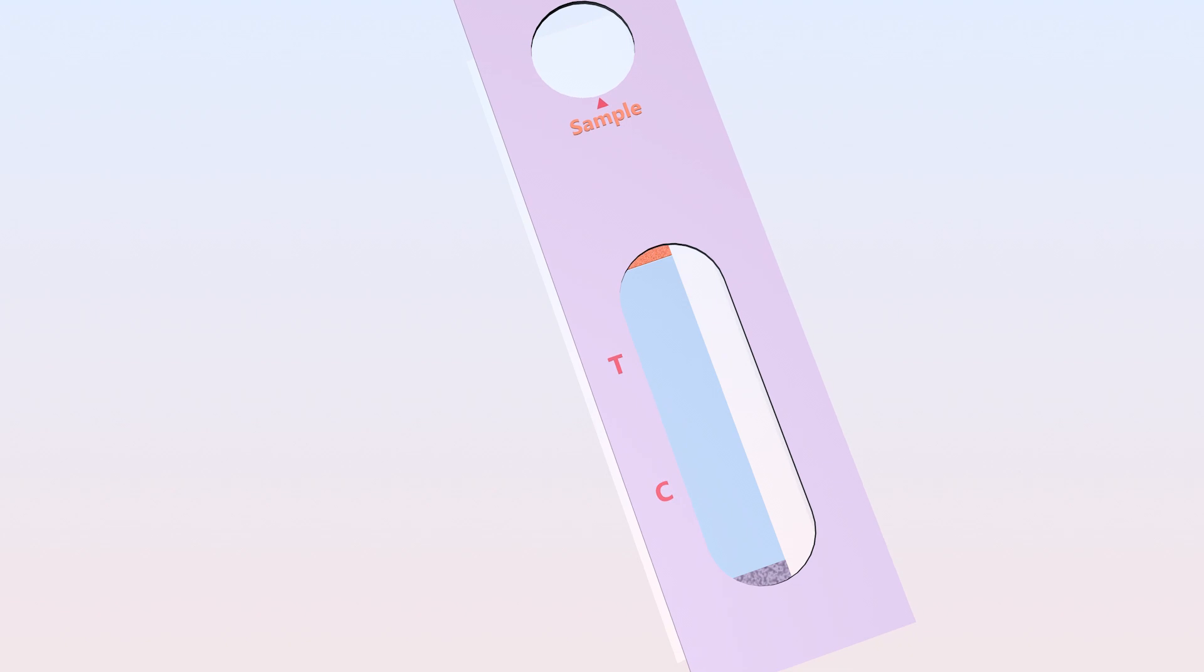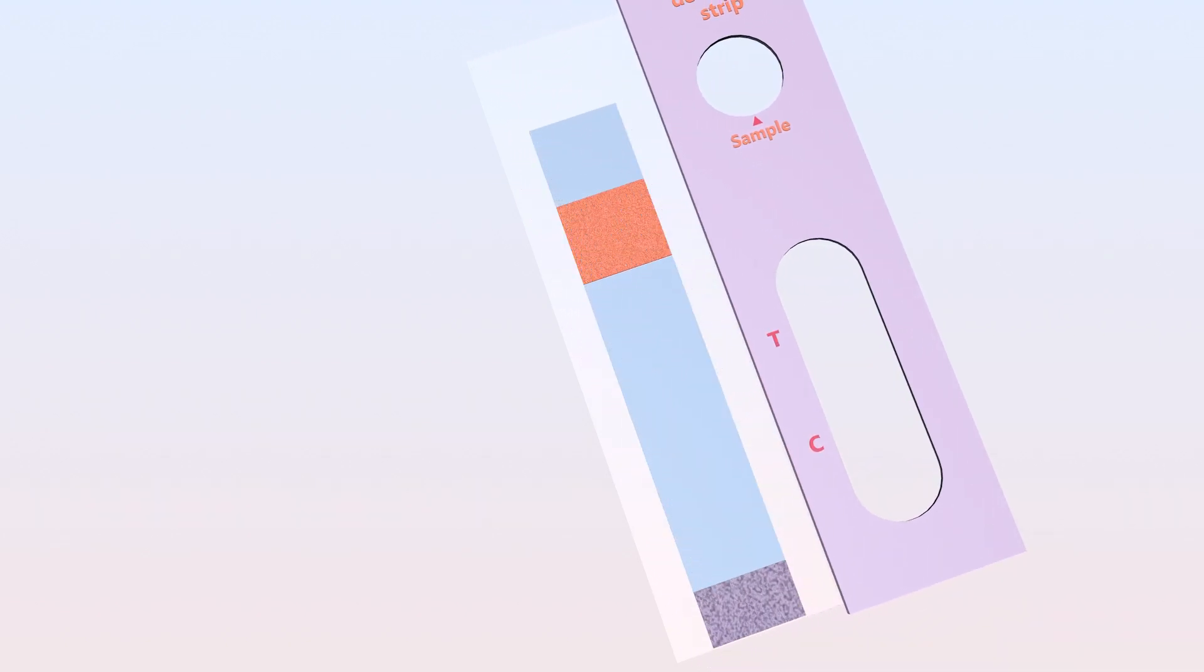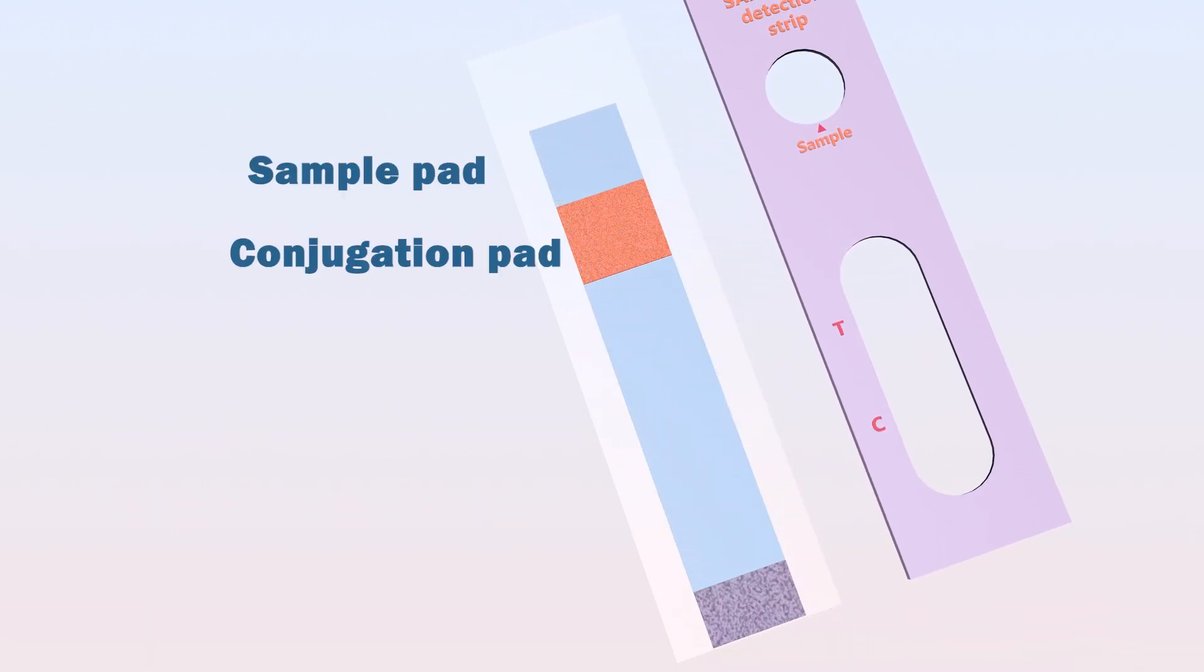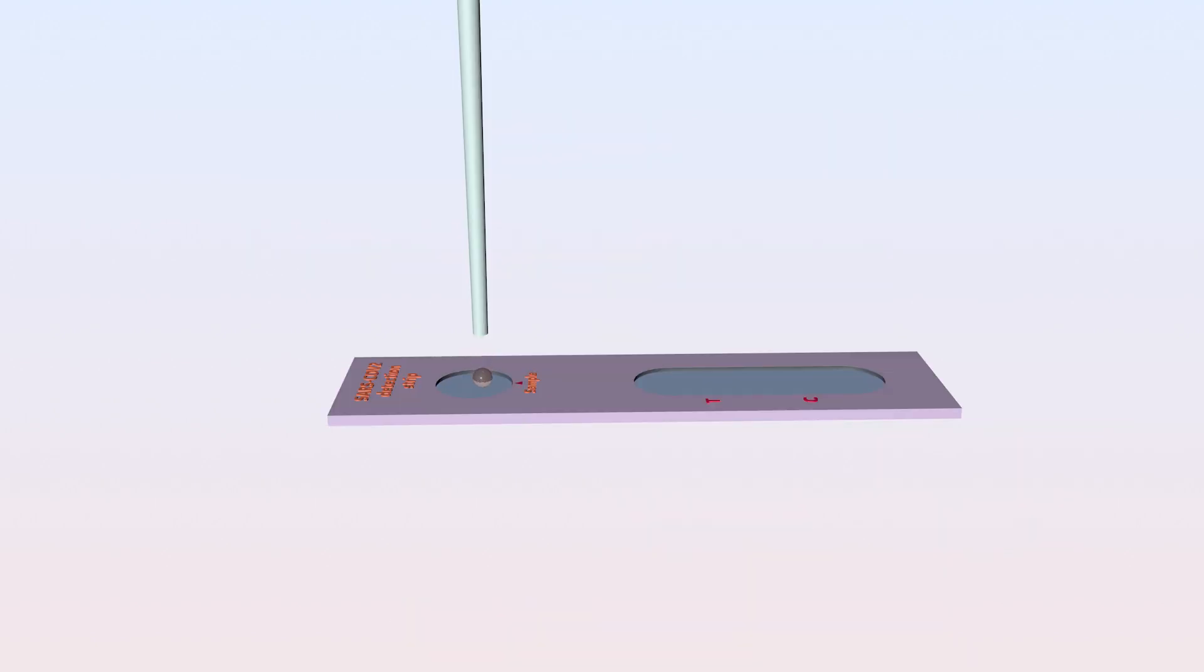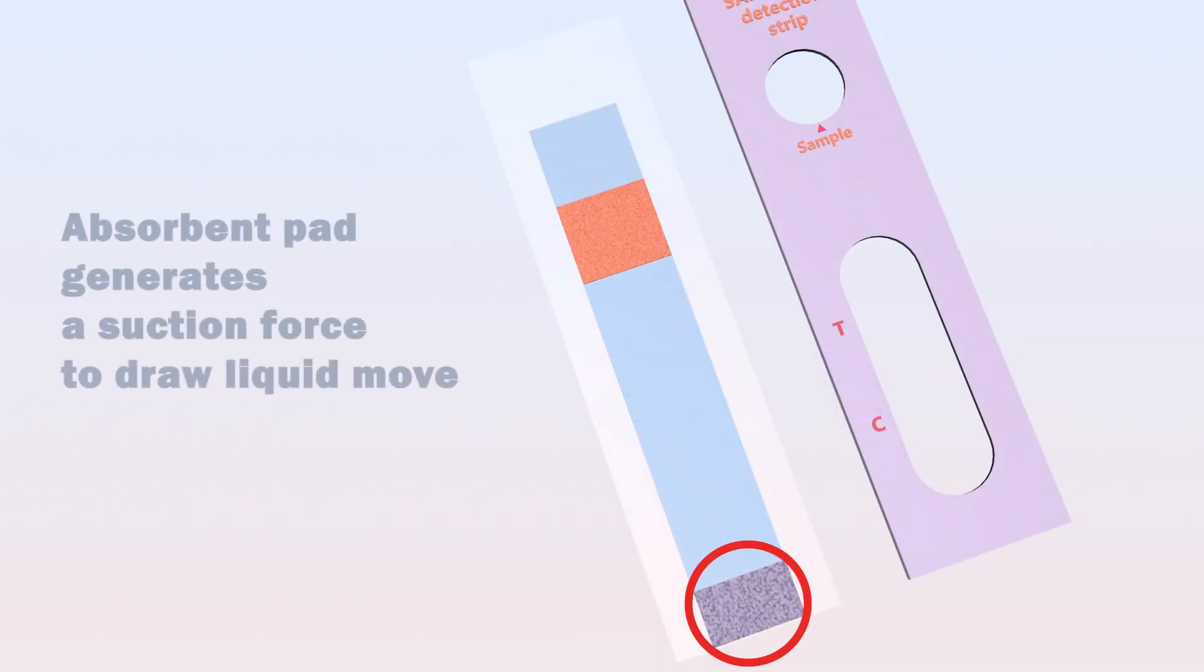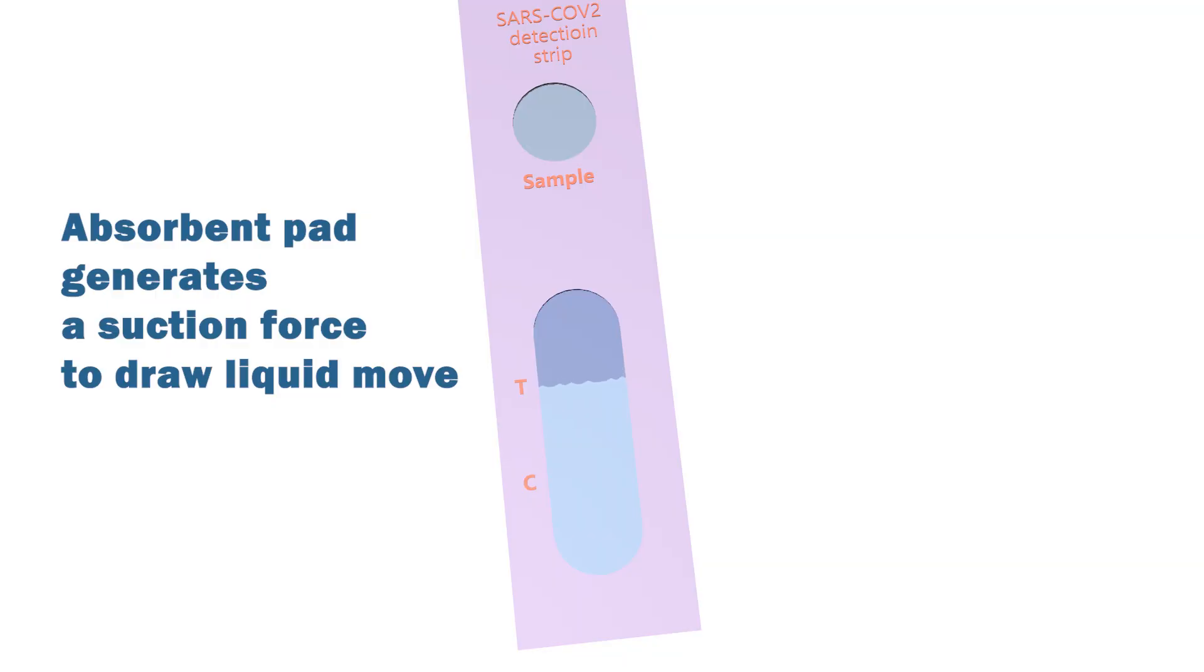When a test strip is opened, you can see a sample pad, a conjugation pad, a test area, and an absorbent pad. The sample pad is where the test strip receives samples in the form of liquid drops. The absorbent pad generates a suction force, pulling the liquid from the sample pad toward the test area and the control area.